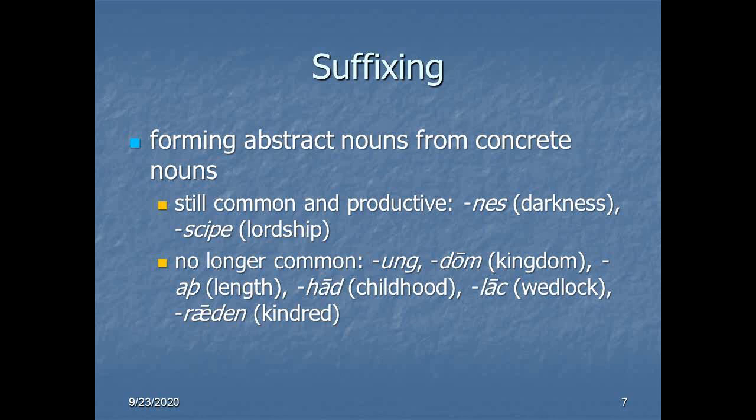Now, of course, Old English also has a number of suffixes that we no longer use or no longer use very much. Ung, we simply don't use. Dome, as in kingdom, is another one of those fossil forms that we have in modern words, but we're no longer using to make new words. Same thing with ath, as in length, which would have originally been lengeth. Or hod, as in childhood. Or neighborhood. Or loch, as in wedlock. And it means exactly what it looks like. Something to which you're bound. Radin, as in kindred, is another that we still have, but are no longer actively using. But what all of these do is they take a concrete thing, or a concrete idea, and express some abstraction of it.